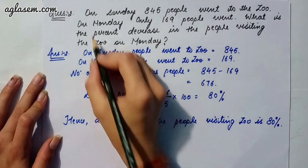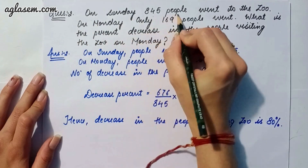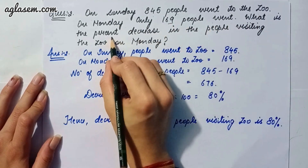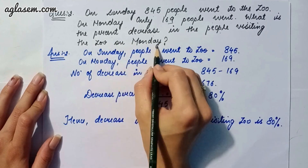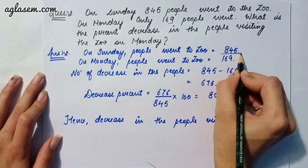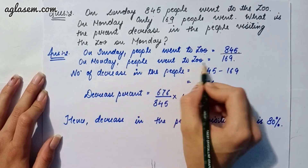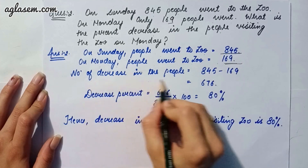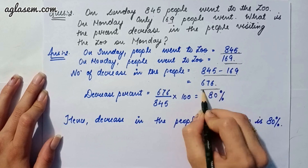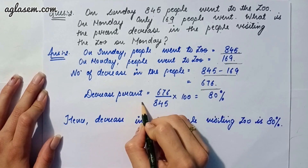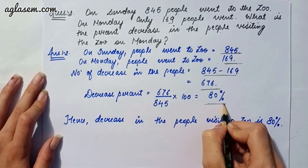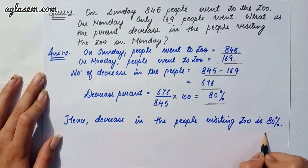Moving to our second question: on Sunday, 845 people went to the zoo; on Monday, only 169 people went. What is the percent decrease in people visiting the zoo on Monday? The decrease in people is 845 minus 169, which gives 676. Therefore, decrease percentage is 676 divided by 845 into 100, giving 80 percent.